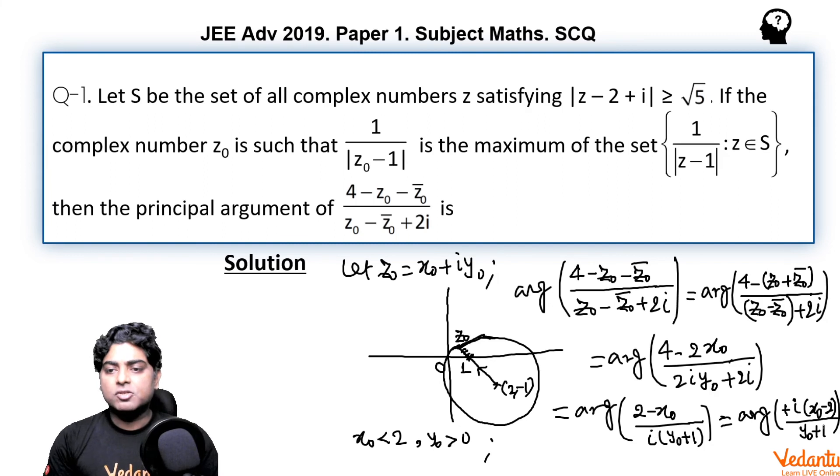So this quantity is purely imaginary and the imaginary part is negative. So argument of this number, iota into some negative number, should be minus pi by 2.